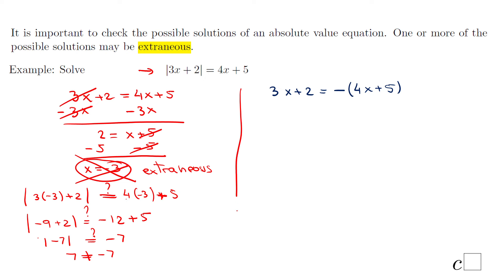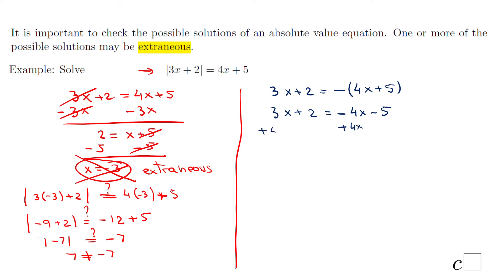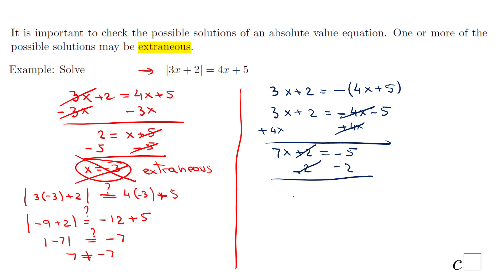Now let's take a look at the second equation. First, distribute the negative sign: we get negative 4x minus 5. Then add 4x to both sides: 3x plus 4x gives 7x plus 2 equals negative 5. Subtract 2: 7x equals negative 7. Divide by 7: x equals negative 1.